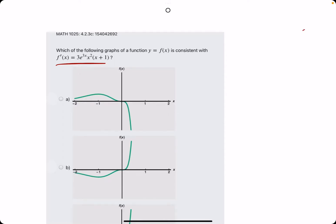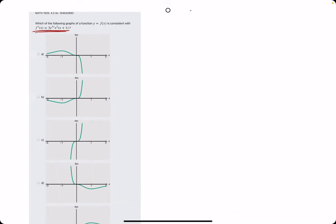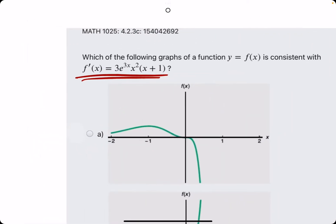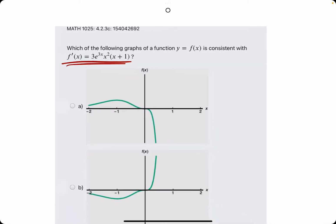Okie dokie. In this problem, we are given a function f prime of x, the equation for f prime, and the goal is to identify the graph of f of x.